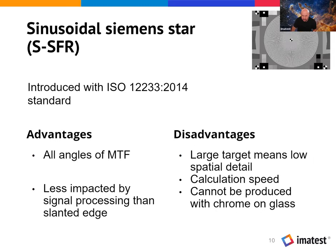The other target in ISO 12233 is the sinusoidal Siemens star. Its advantage is that it measures all different angles of MTF and is less impacted by signal processing than the slanted edge. The disadvantage is that it's a large target with low spatial precision and slow calculation, making it unsuitable for real-time manufacturing testing. There are also production issues because it uses graduated tones — we can't use the unit-tone chrome-on-glass process to produce this target, which is very popular for medical imaging systems.